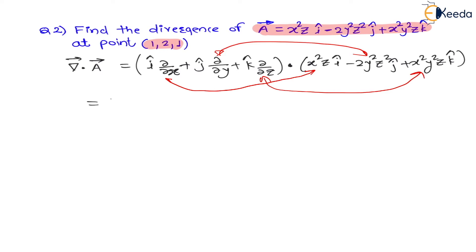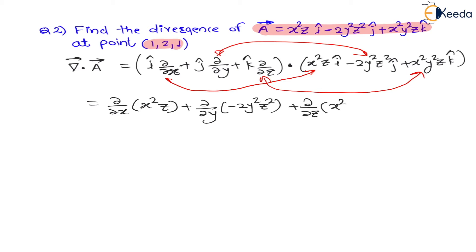Therefore the divergence equals ∂/∂x(x²z) + ∂/∂y(-2y²z²) + ∂/∂z(x²y²z). Here it is a partial derivative. For x, only x² is variable and z is constant, so the derivative of x² is 2x, giving 2xz. For y, y² is variable and z² and -2 are constants, so derivative of y² is 2y, giving -2·2·y·z² = -4yz².